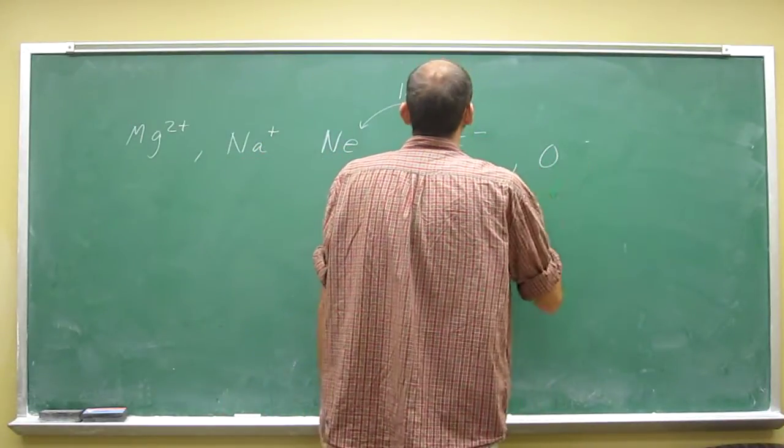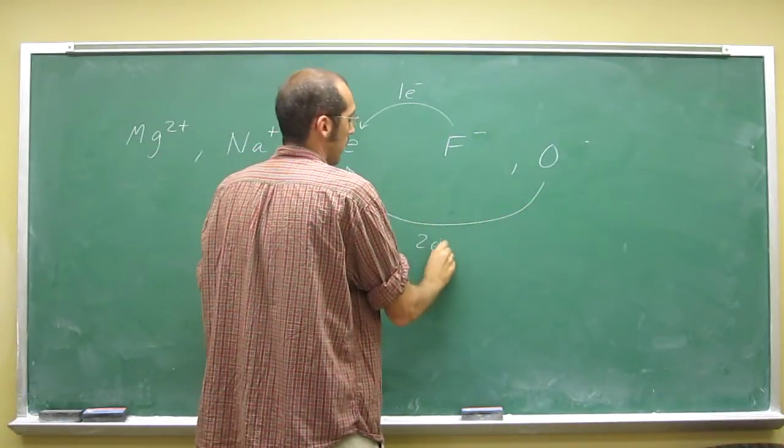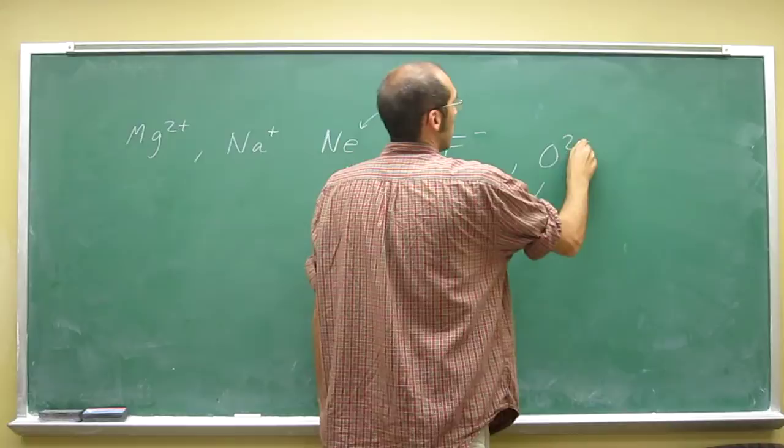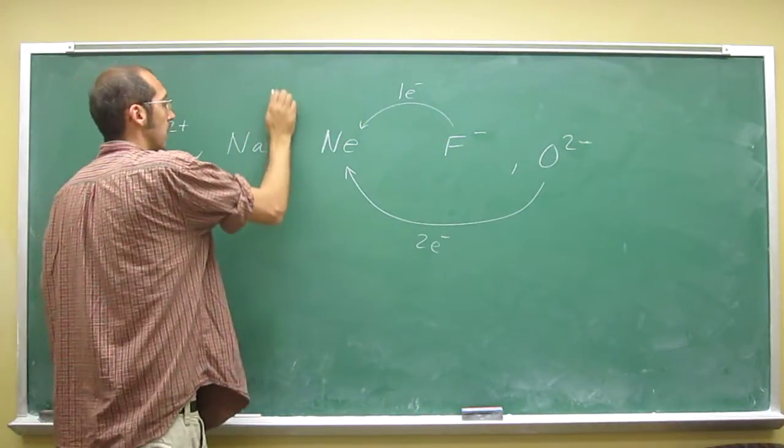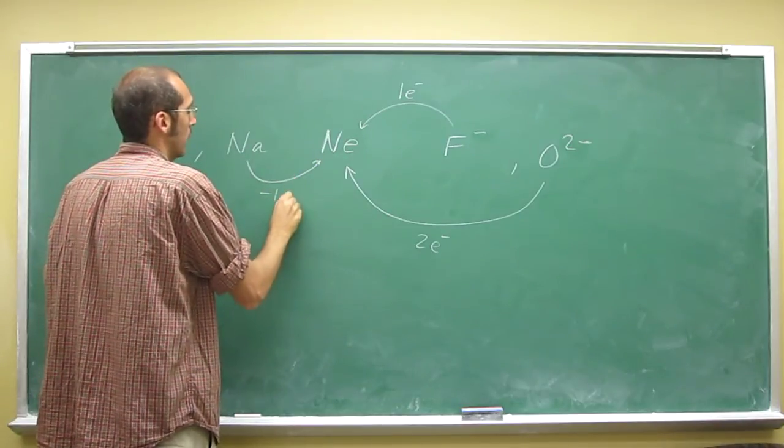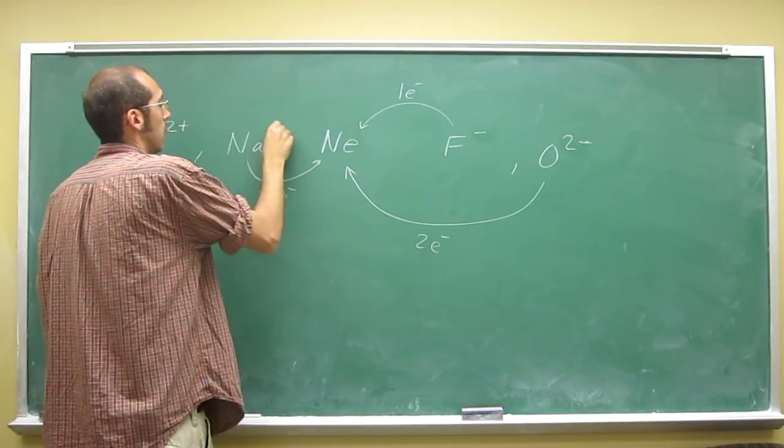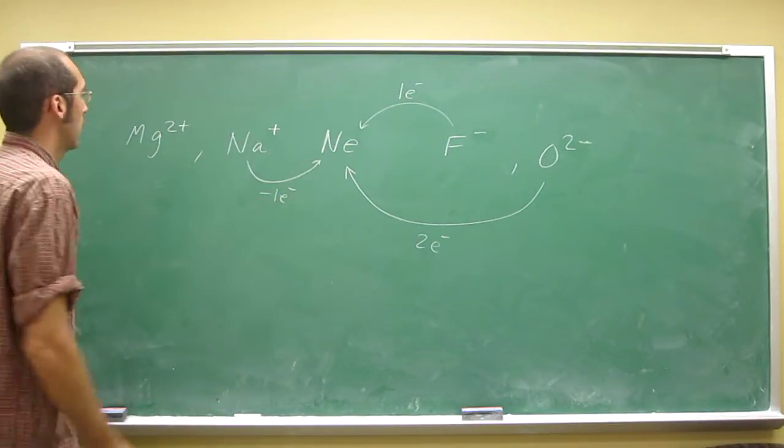O needs to gain two electrons to become O2- and get the neon configuration. Sodium needs to lose its one electron to get that plus and attain the neon configuration.